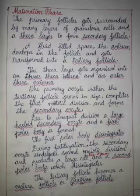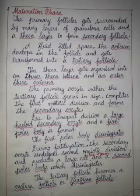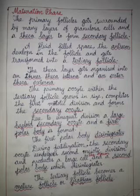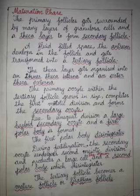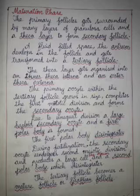At the end of the first meiotic division, the primary oocyte produces a large haploid secondary oocyte and a first polar body. This first polar body will be disintegrating. The haploid secondary oocyte will undergo the second meiotic division only if fertilization takes place.